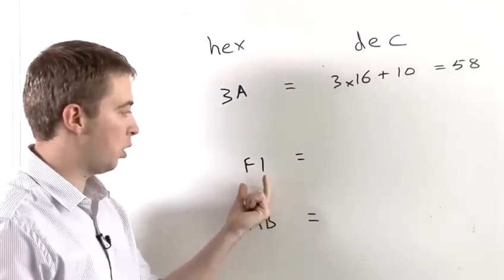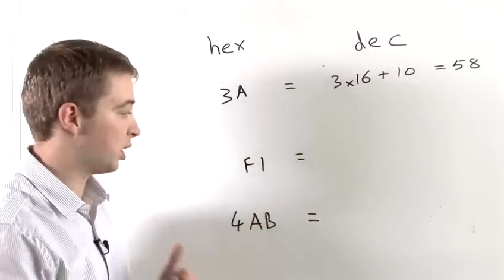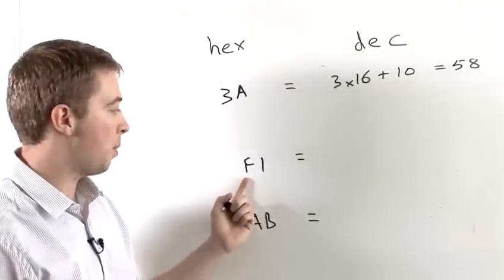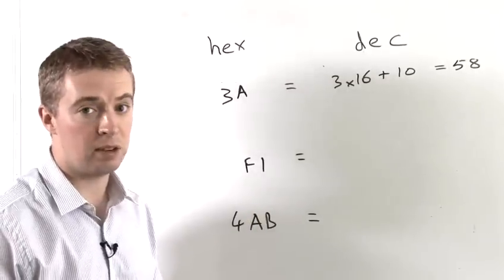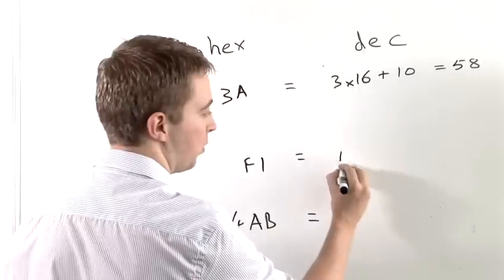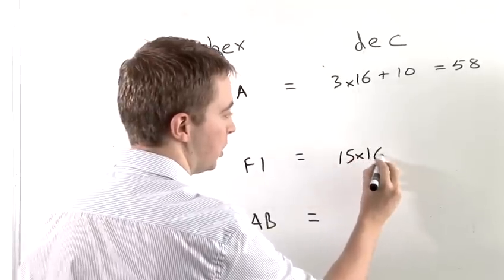Let's move on now to a slightly more complicated example, just because it's a slightly bigger number. F represents the number 15 in hexadecimal. So this time we're going to have 15 times 16.